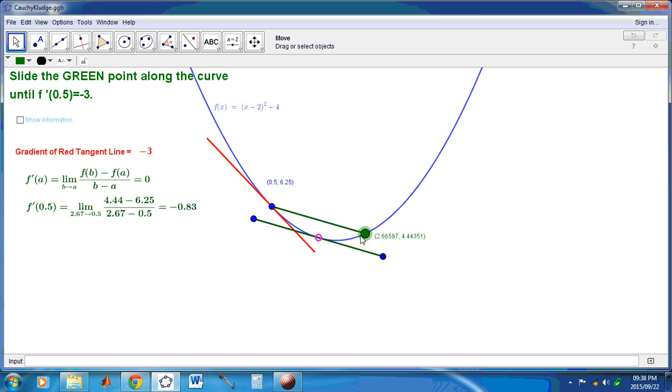But one of the main reasons is that in order for this function here to be differentiable at this point here, essentially what Cauchy's definition is saying is that it needs to have a derivative at every point in this short interval here. Can you see that? Except possibly, perhaps, at that blue point.